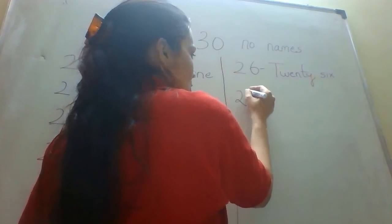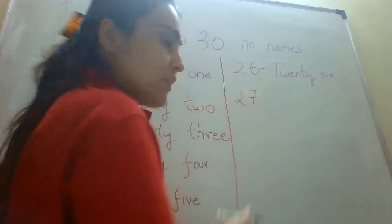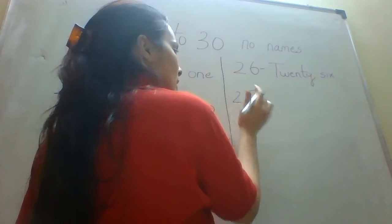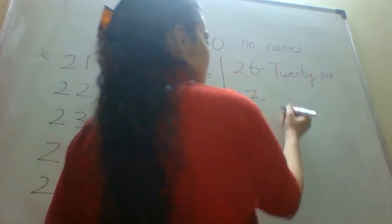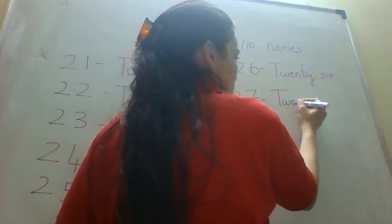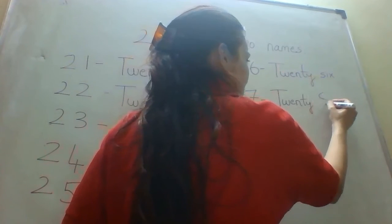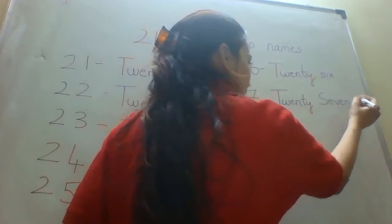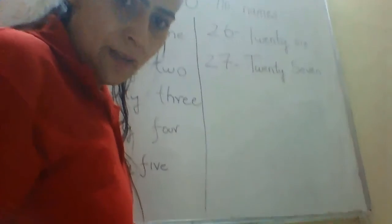Then we have 27. So this is going to be 27: T-W-E-N-T-Y, and 7, S-E-V-E-N. Twenty-seven.